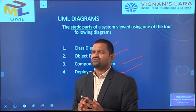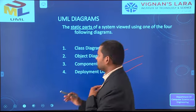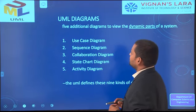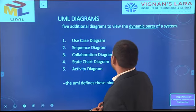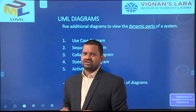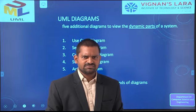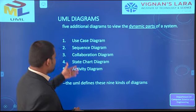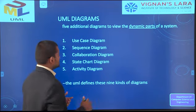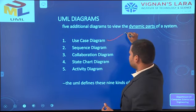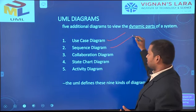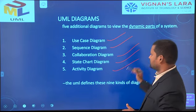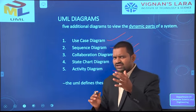Static diagrams represent the blueprints of the system, showing only the structural view. In addition, dynamic diagrams exist. There are five dynamic diagrams: use case diagram, sequence diagram, collaboration diagram, state chart diagram, and activity diagram.